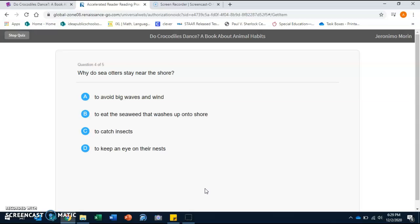Four: Why do sea otters stay near the shore? A: to avoid big waves and wind, B: to eat the seaweed that washes up onto shore, C: to catch insects, or D: to keep an eye on their nests. Yes, good job boys and girls, to avoid big waves and wind.